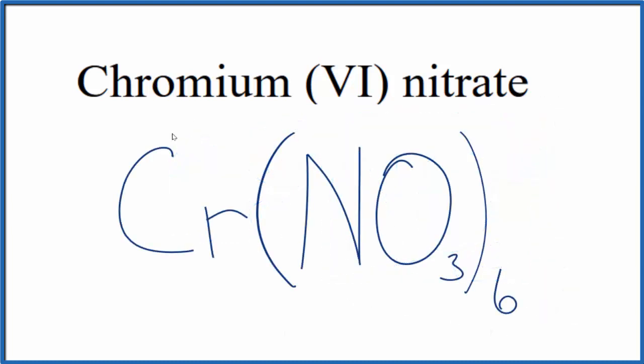So this is the formula for chromium 6 nitrate, Cr(NO3)6. We have 6 of these nitrate ions.